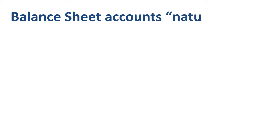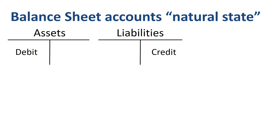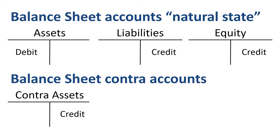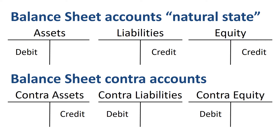Let's first take a look at CONTRA accounts on the balance sheet. As you know from studying the basics of debits and credits, balance sheet accounts have a natural state. Asset accounts have a debit balance, liabilities accounts have a credit balance, equity accounts have a credit balance. A CONTRA account has an opposite balance — a CONTRA asset account has a credit balance, a CONTRA liability account has a debit balance, a CONTRA equity account has a debit balance.